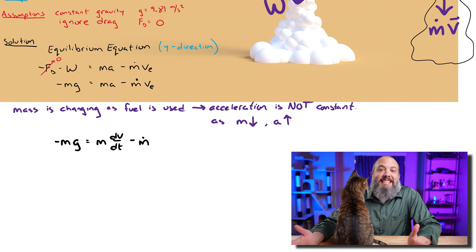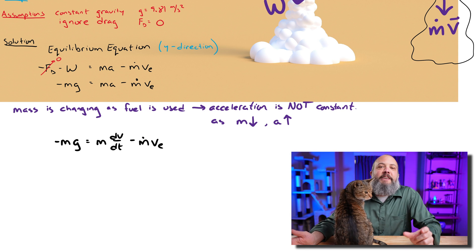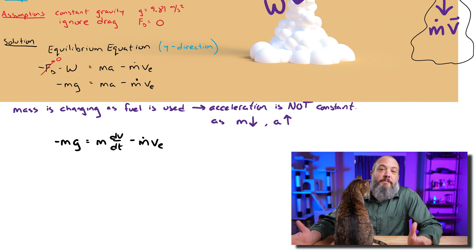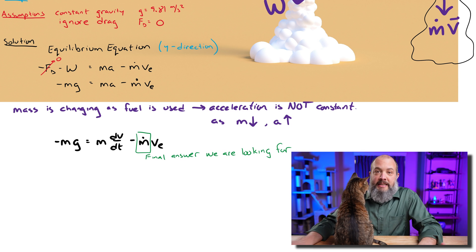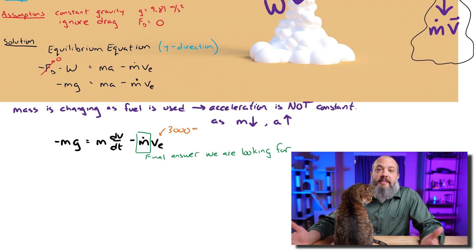So first, our acceleration term I will rewrite as dv/dt. Now m dot, that's going to be the final answer we're looking for. And the problem statement told us that that was constant. The exit velocity is constant, that's 3000.